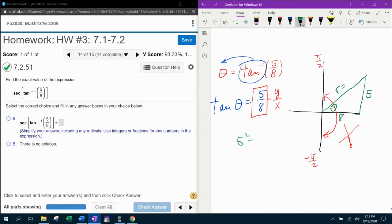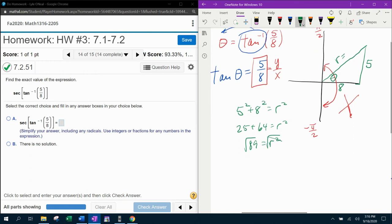Here we go. We're going to have 5 squared plus 8 squared equals r squared. That's going to be 25 plus 64 equals r squared, and that's going to be 89. Taking the square root of both sides, I don't believe that the square root of 89 is going to simplify. So I believe this is simplest radical form.